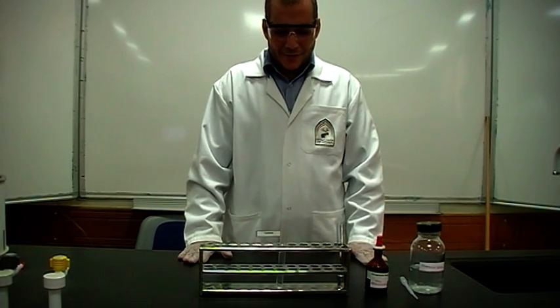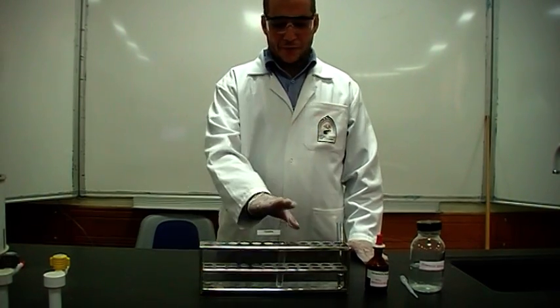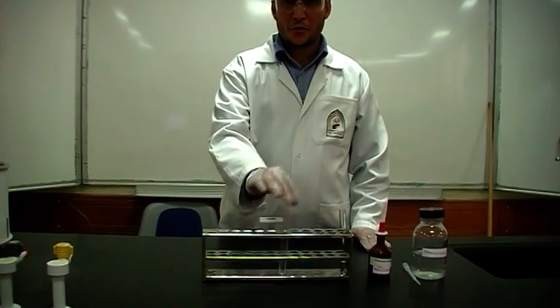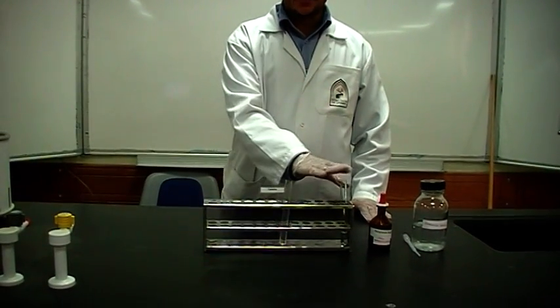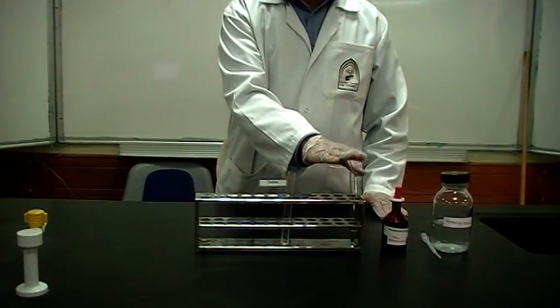Let's do the nitroprusside test. Simply, we have cysteine, amino acid or protein containing cysteine, and you have a control that doesn't contain any cysteine.